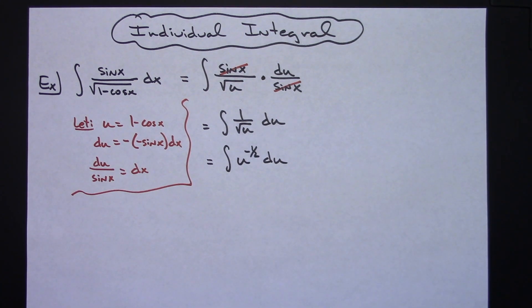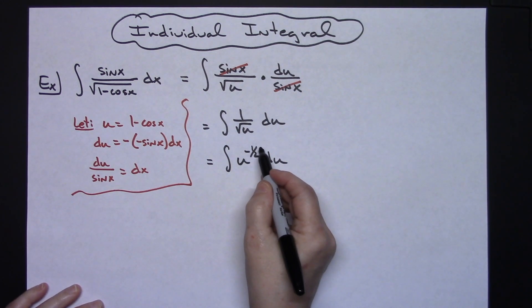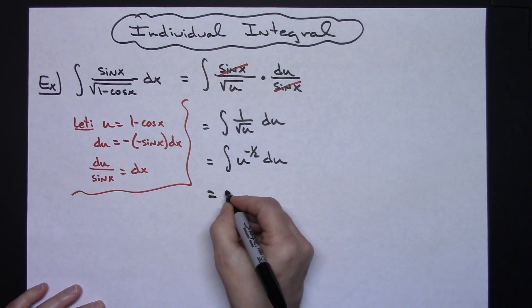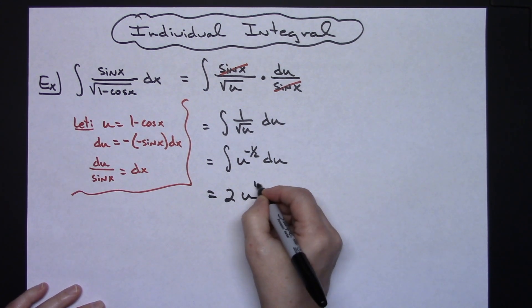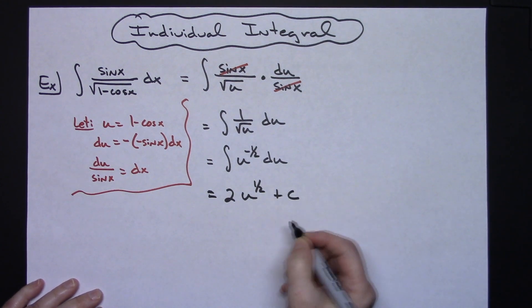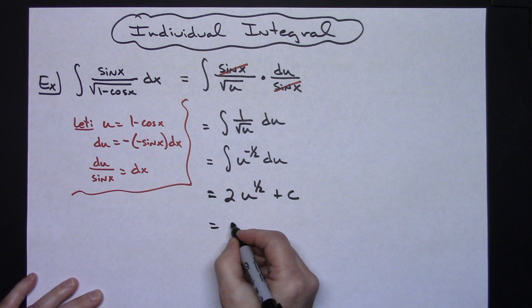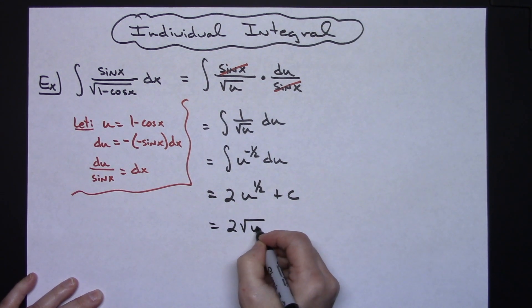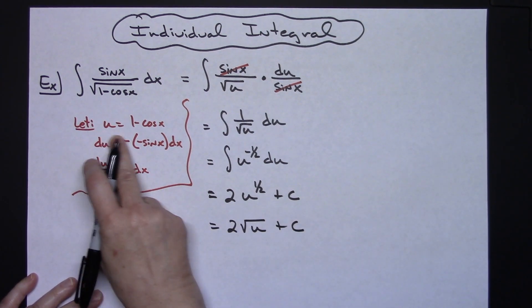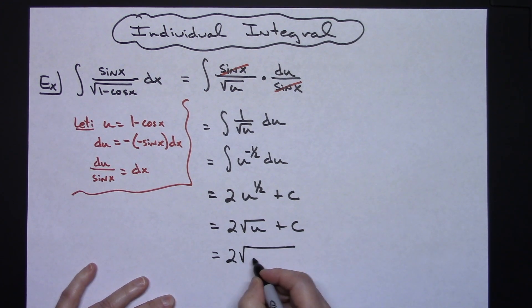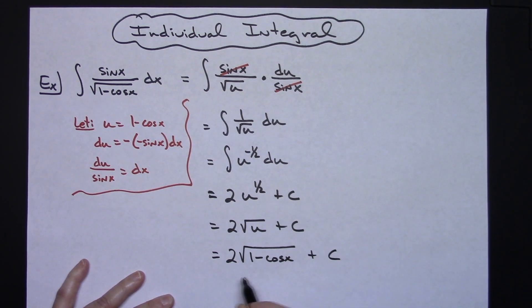Now it is to a place where I can integrate this. Integrating by adding one there would give me a one half. So in front one over one half will give me a two u to the one half plus c. Rewriting this in radical form since I had a radical up there is going to give me two square root of u plus c. Replacing u with what it is will give me a final answer of two square root of one minus cosine x plus c.